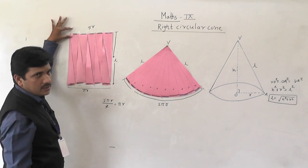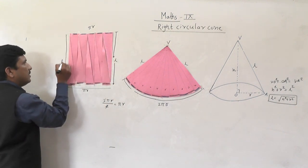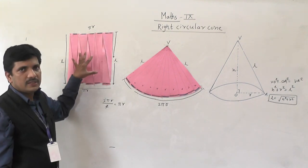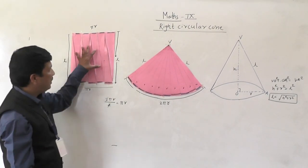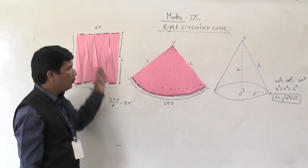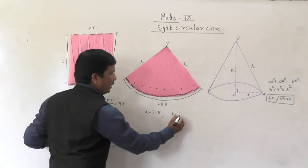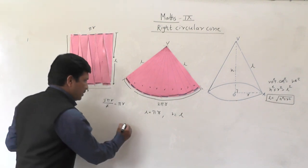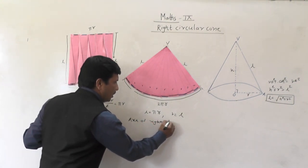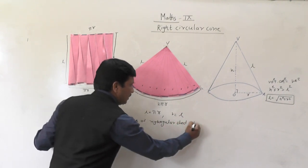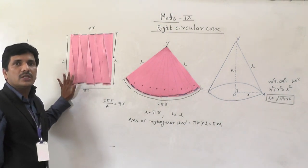This is the slant height l, and this is πr — opposite sides are equal in length. This is a rectangle. All 4 angles will be 90 degrees. So if I want to find out the area of this, I need to do length × breadth. Length is equal to πr and breadth is equal to l, the slant height. So area of the rectangular sheet = πr × l = πrl.